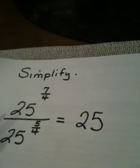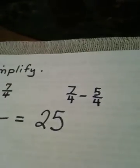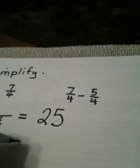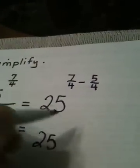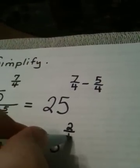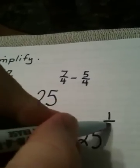25 to a power divided by 25 to a power becomes 25—you don't change the base, and the powers get subtracted. 7 fourths minus 5 fourths. So we use laws of exponents. That becomes 25 to the... luckily these have the same denominator, it makes it easy. That's 25 to the two-fourths.